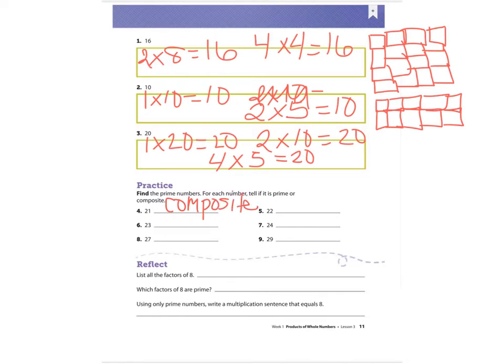Number six, the number 23. I know that one times 23 is 23. But from looking at a factor chart, 23 does not have any other factors — just one and itself. So 23 is an example of a prime number.